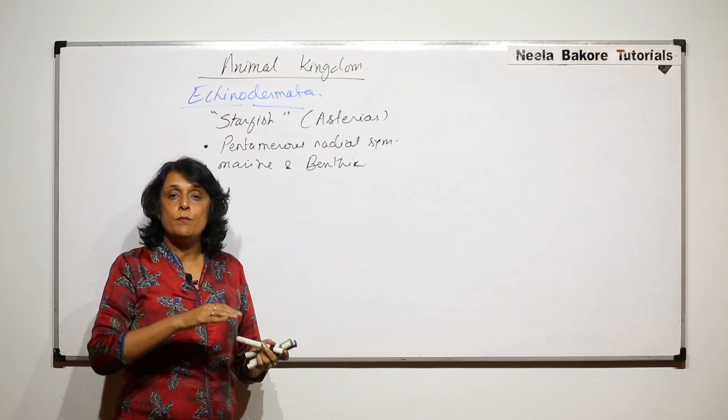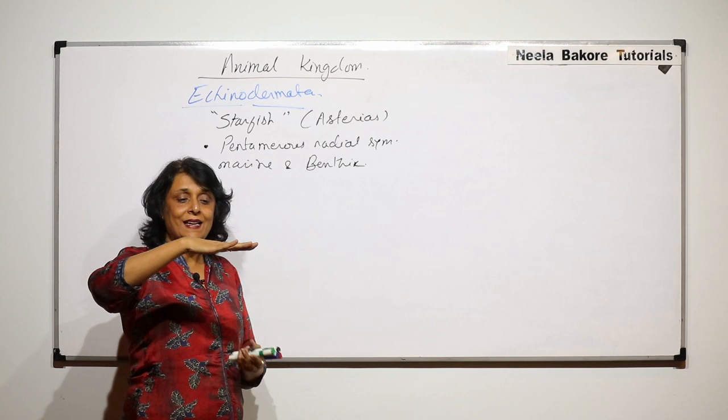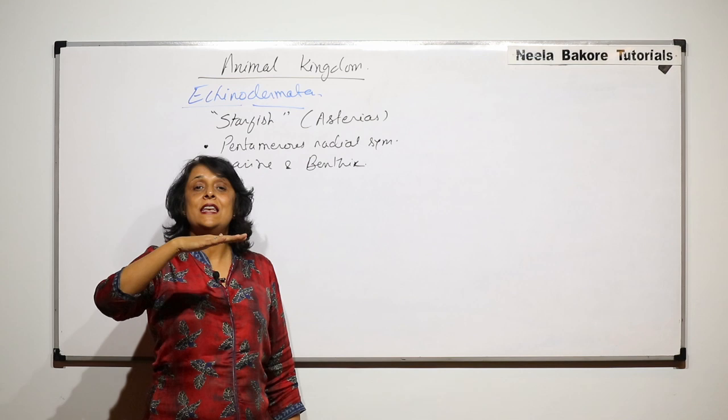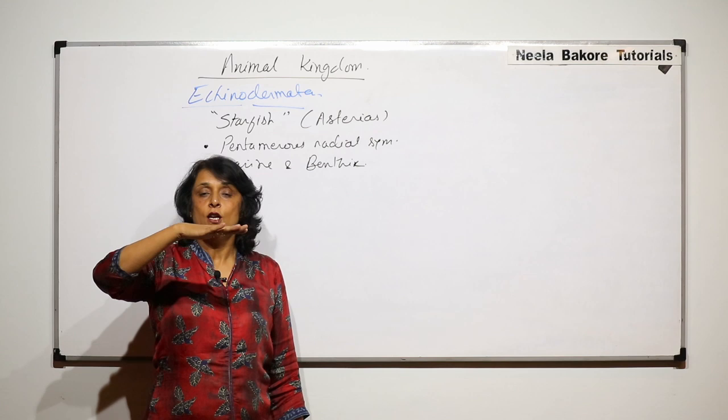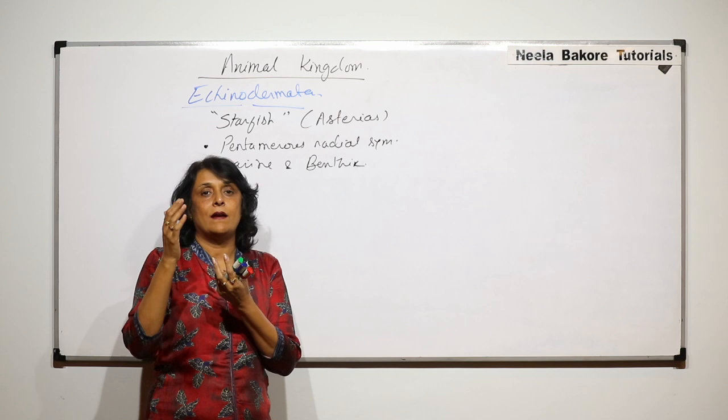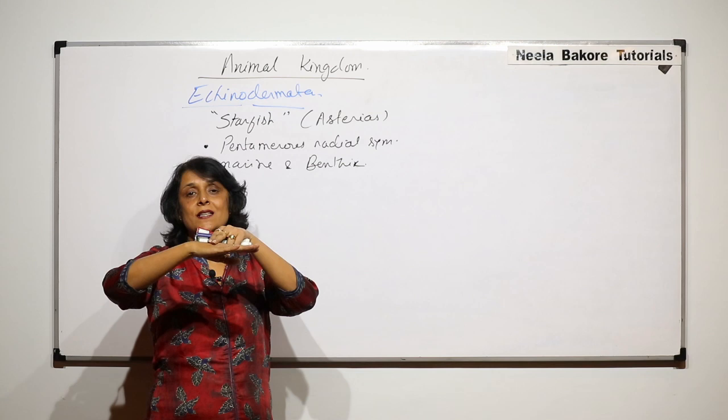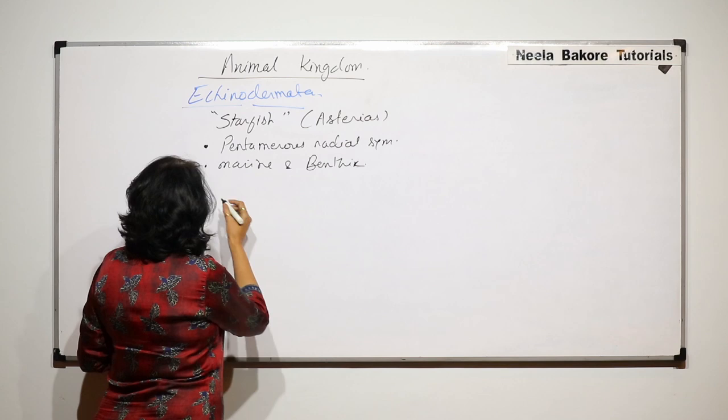The body is flat and when they are on the sea bottom they are crawling on the sea bottom. There is a lower side and an upper side. We give the names on the basis of the presence of mouth or anus. The mouth is on the lower side — the oral side is the side which has the mouth. The upper side has the anus and it is known as the aboral side.